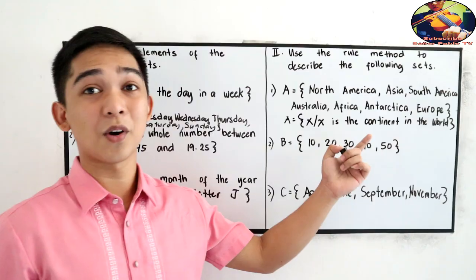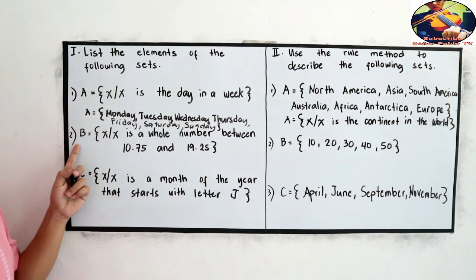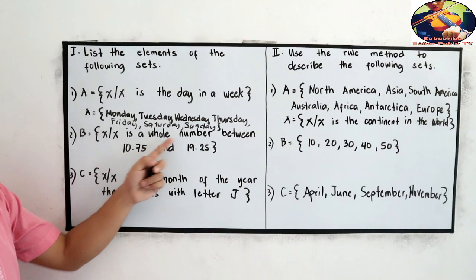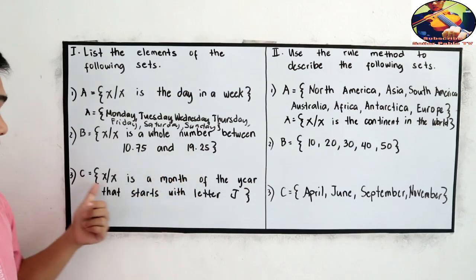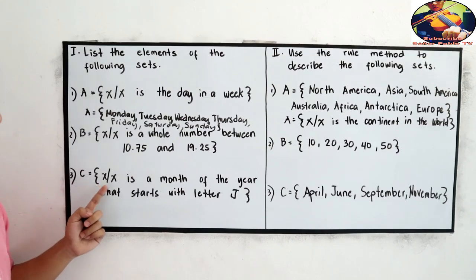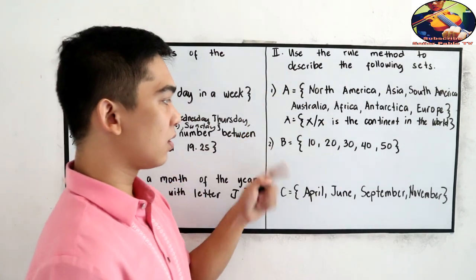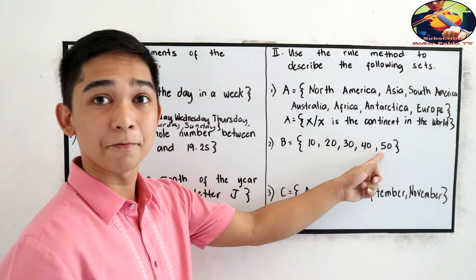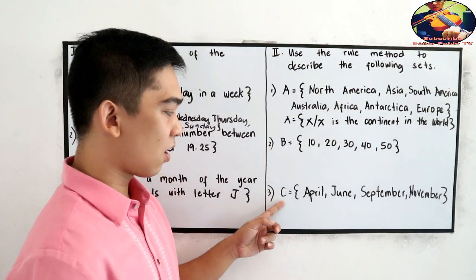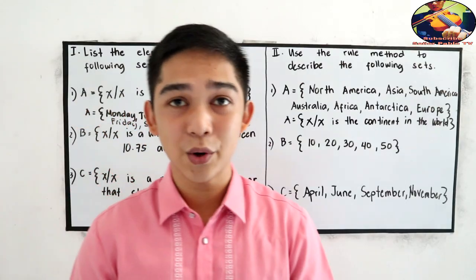Now I want you to answer: Number 2, set B is equal to x such that x is a whole number between 10.75 and 19.25. Number 3, set C is equal to x such that x is a month of the year that starts with letter J. For part 2, number 2: set B is equal to {10, 20, 30, 40, 50}. Number 3: set C is equal to {April, June, September, and November}. You can pause this video then start answering.